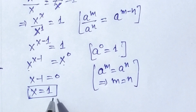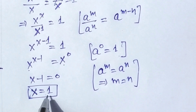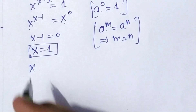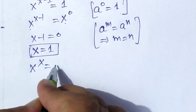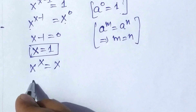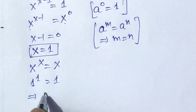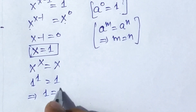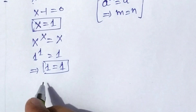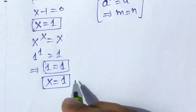This is our final answer. We can check by putting the value of x back into x to the power of x equals x. Putting x equal to 1: 1 to the power of 1 is equal to 1, which implies 1 equals 1. So the value of x is equal to 1.